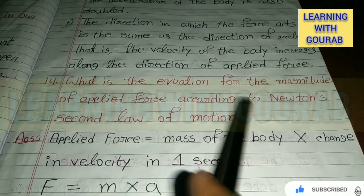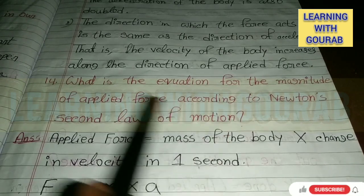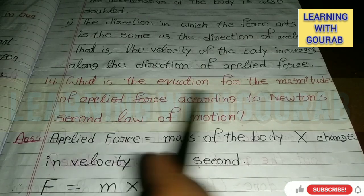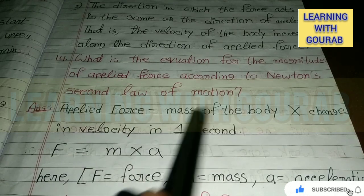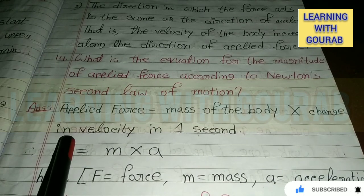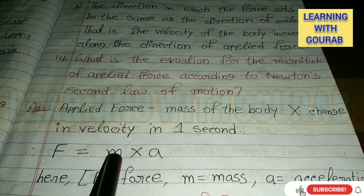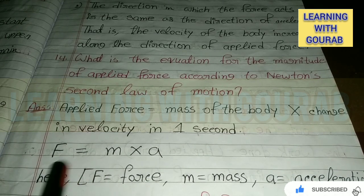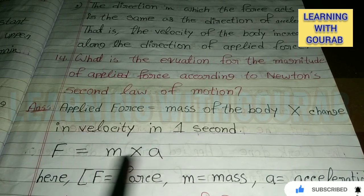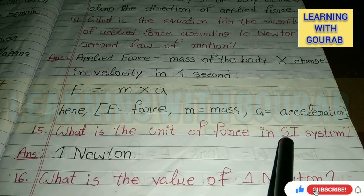Next question: What is the equation for the magnitude of applied force according to Newton's second law of motion? Answer: Applied force equals mass of the body multiplied by change in velocity in one second. Or, if F is force, M is mass, and a is acceleration, then F = M × a. That's the formula. What is the unit of force in the SI system?